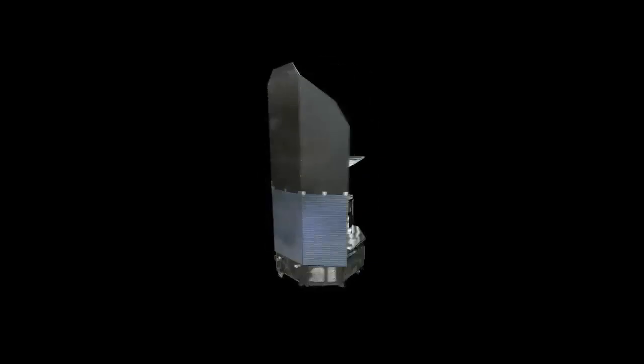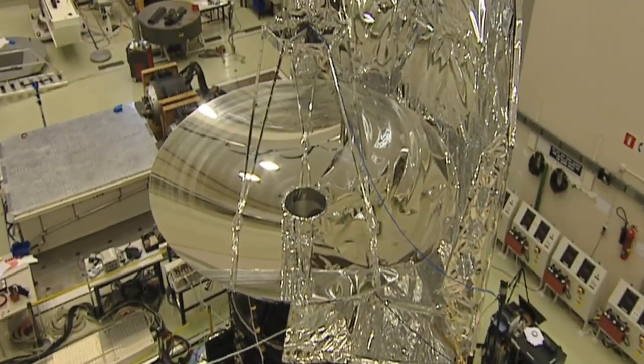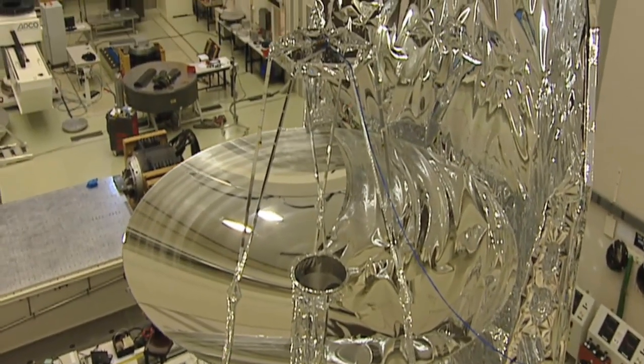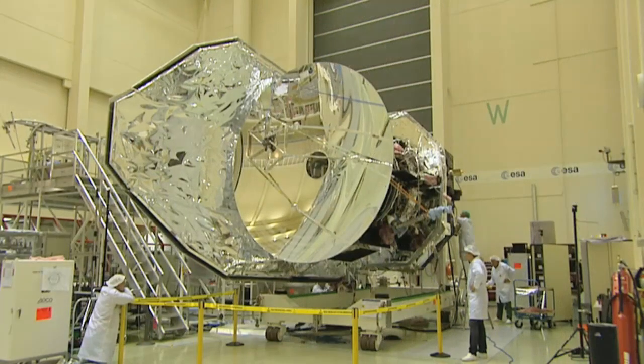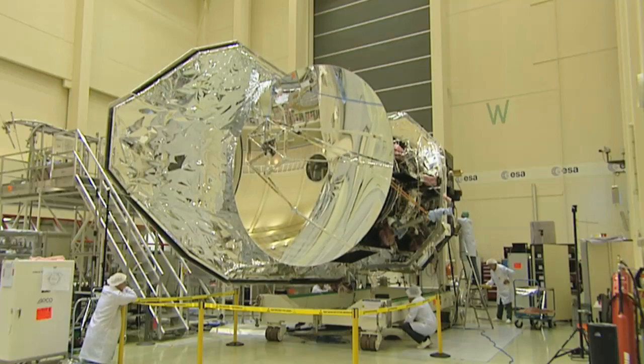Herschel's primary mirror is more than four times larger than any previous infrared space telescope and can collect almost 20 times as much radiation. The mirror is so perfect that irregularities on its surface are less than a thousandth of a millimeter high.